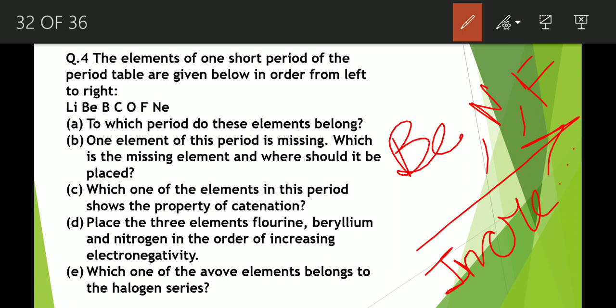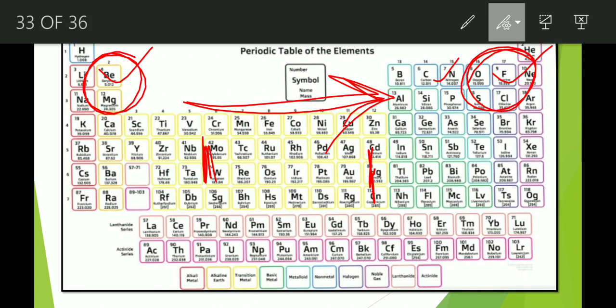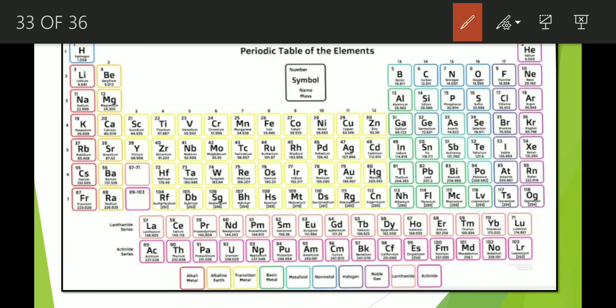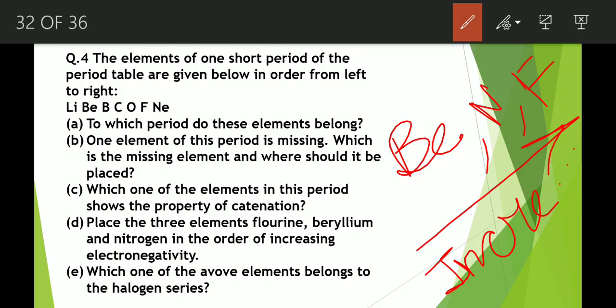Next question: which one of the above elements belongs to the halogen series? Halogens are group 17 elements. Among these elements, fluorine is present in group 17, so fluorine is the halogen.